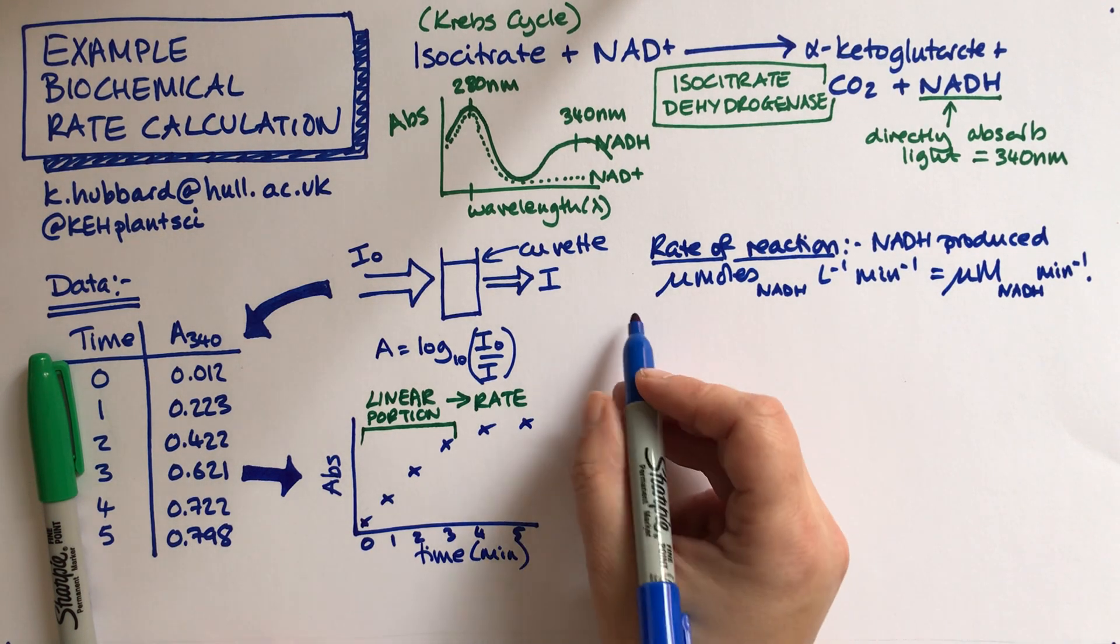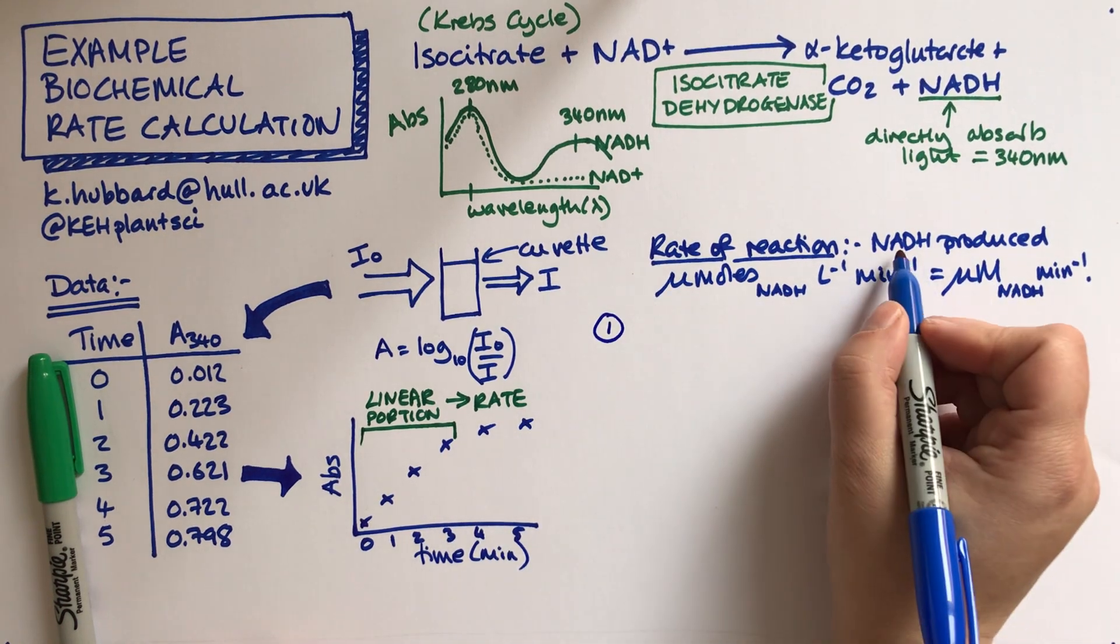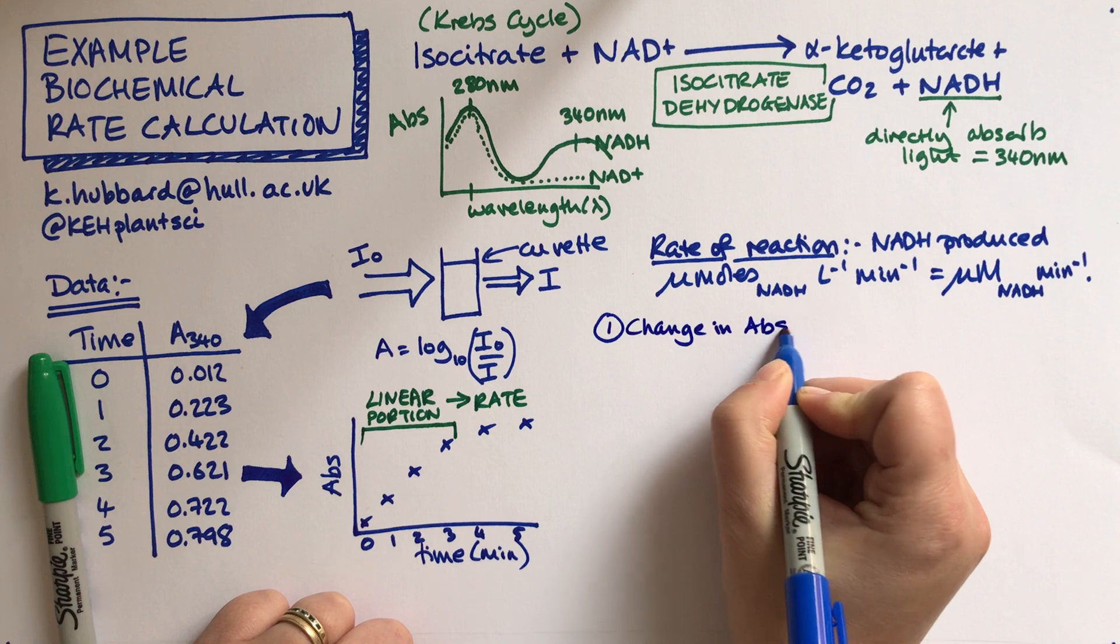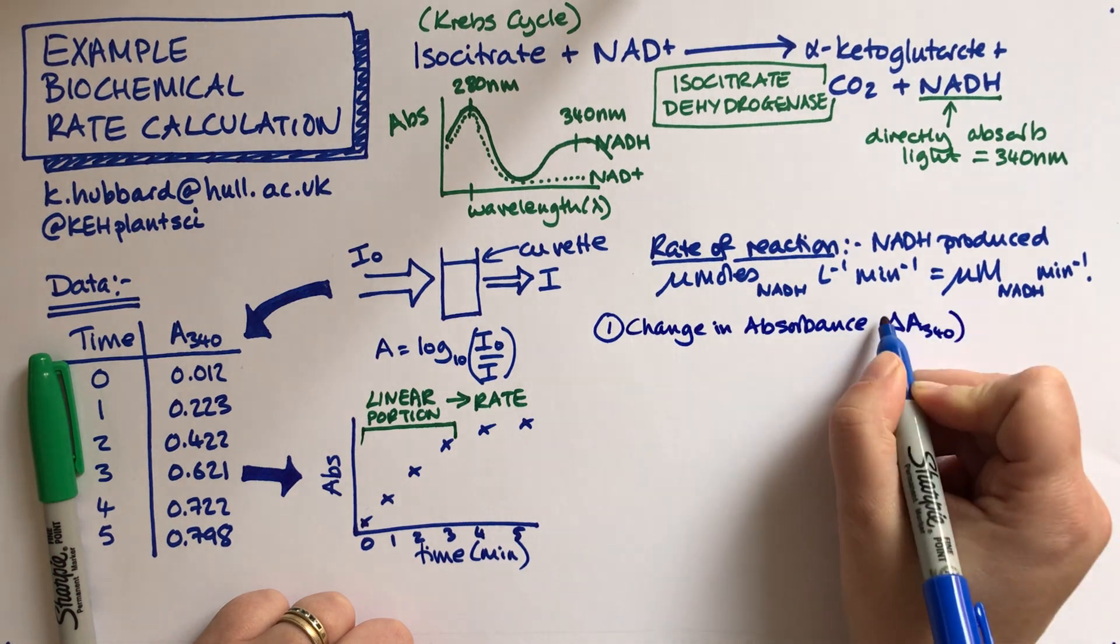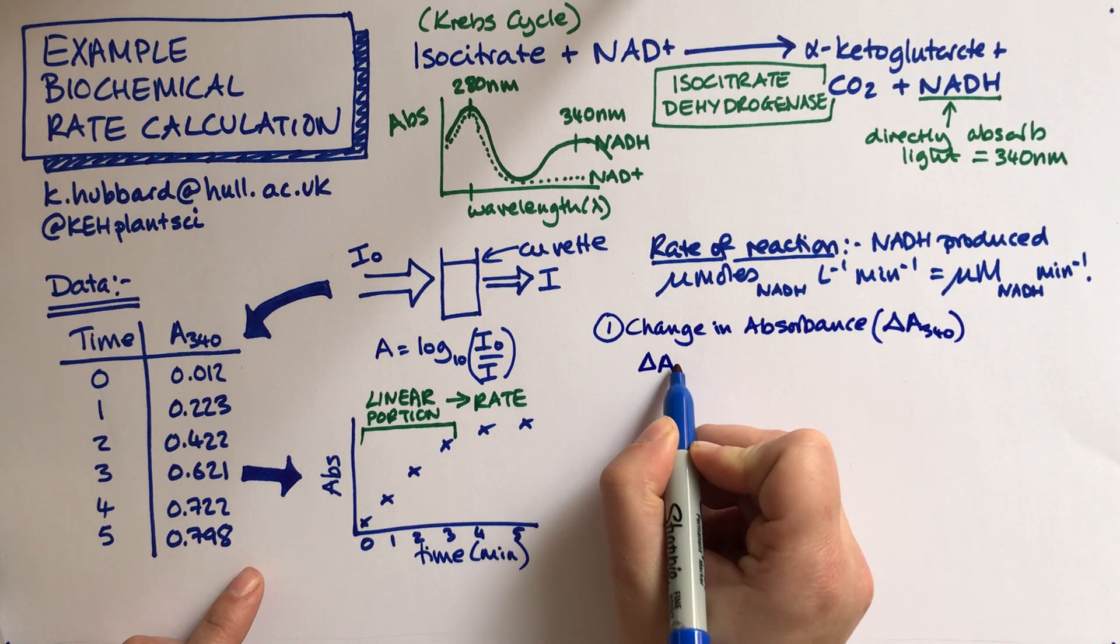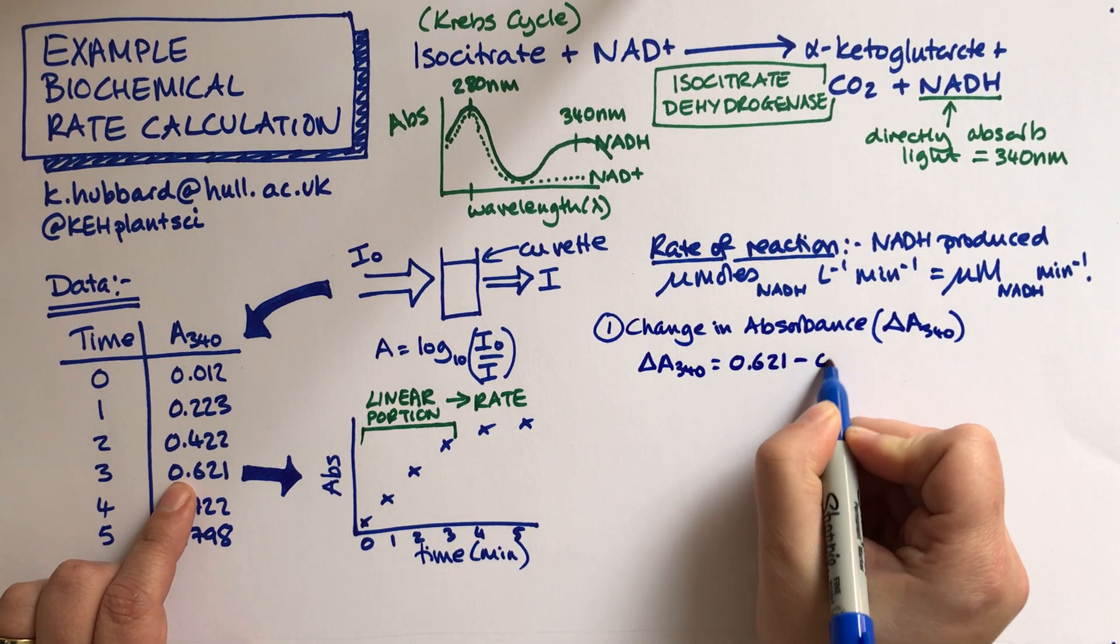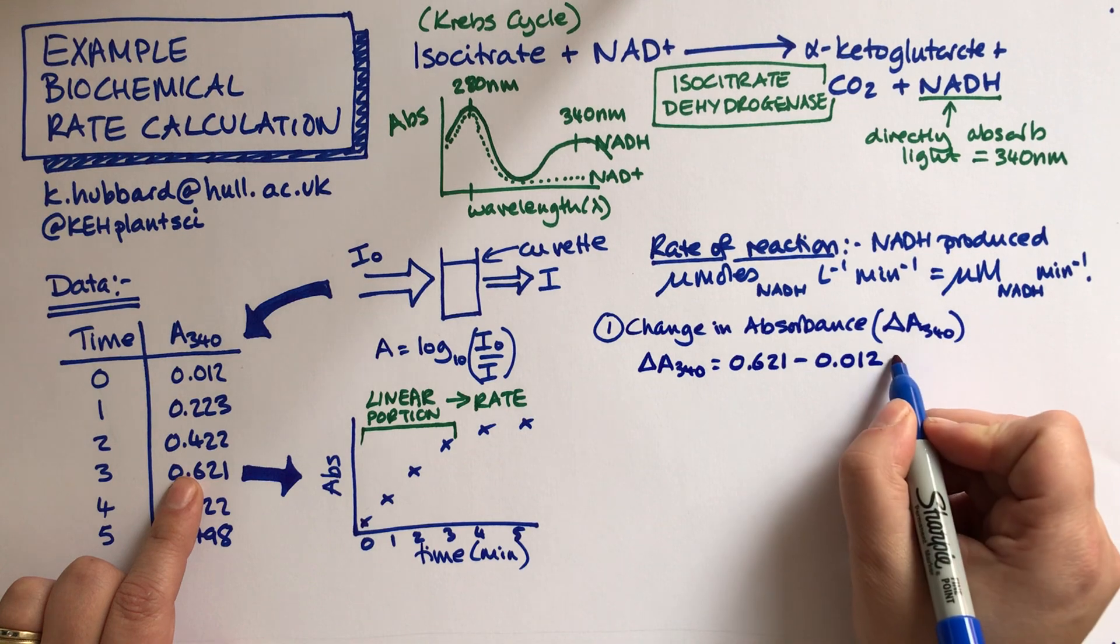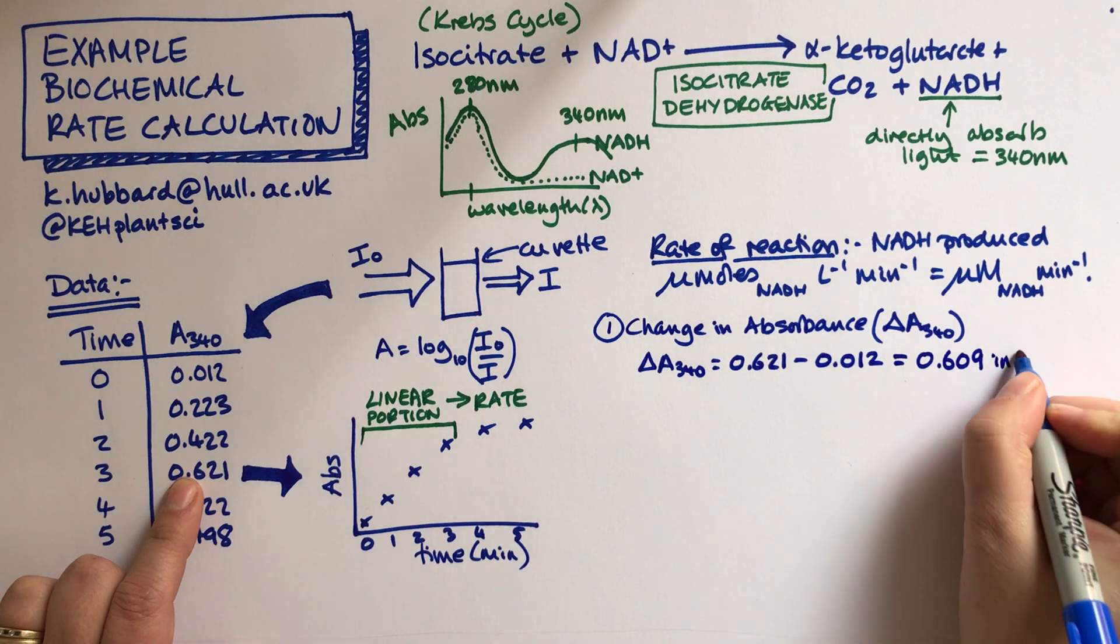I think there's three steps to do for this calculation. The first step is we need to find the change in absorbance, which we can call delta A 340. So we'll use the linear portion. Delta A 340 if we're going to use just the first three minutes is 0.621 minus 0.012. So we're just subtracting those values out. So how much has the absorbance changed? That gives us an answer of 0.609 in three minutes.